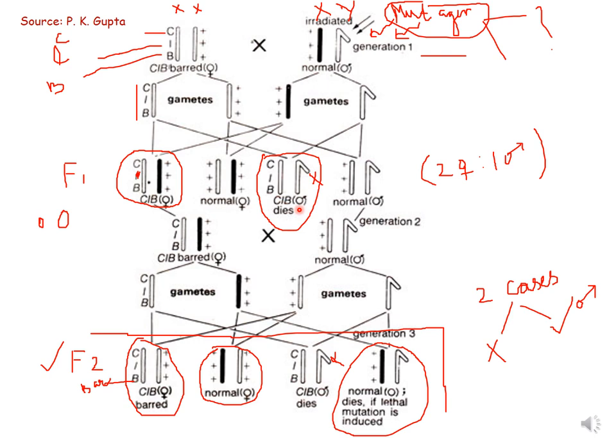In F1, the female carrying CLB on one chromosome and plus-plus-plus on the other will survive and will be bar-eyed. The other female will be normal with two X chromosomes — one normal and one irradiated with mutagen — and will also survive. The male carrying the CLB chromosome will die because it has the lethal gene with no corresponding wild-type gene. The other male is normal because it has all wild-type genes.